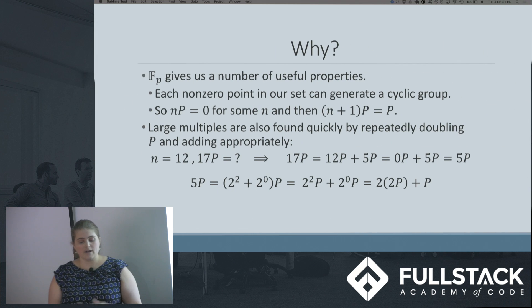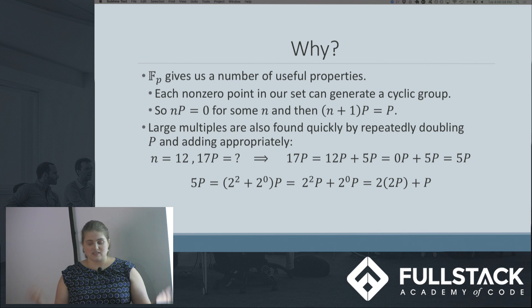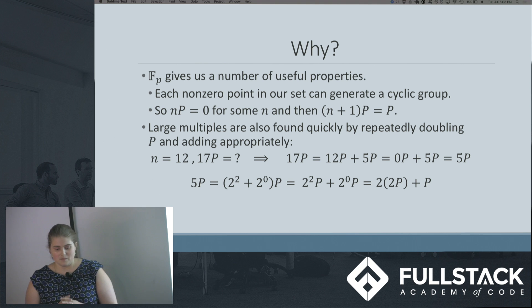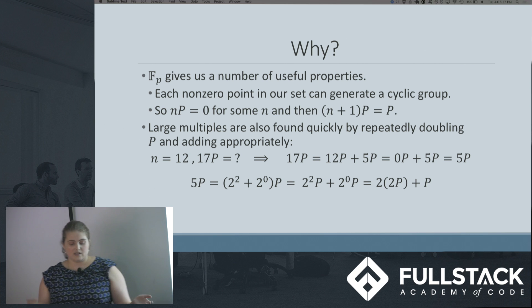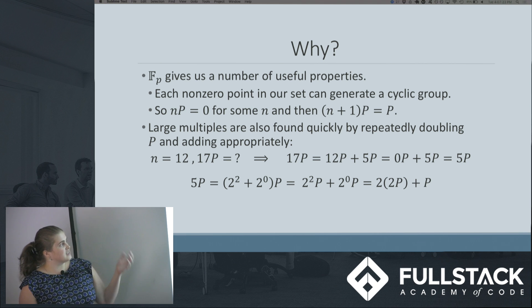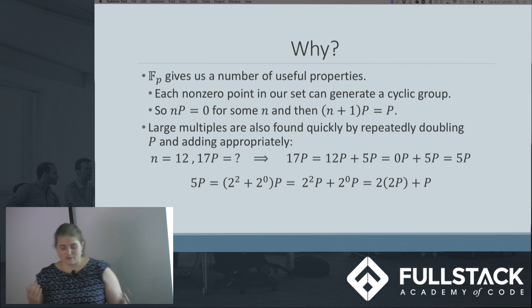Why do we do this? F_p gives us useful properties. In mod p, each non-zero point can generate a cyclic group. That means if you add an element P to itself enough, you will get back to zero and then eventually back to P. This can be used to reduce large multiples of P. In our example, if we have n = 12 and we want to find 17P, we can take 12 out, get 5P. We can also find large multiples by repeatedly doubling P and adding appropriately—this might look really familiar to converting numbers to binary.